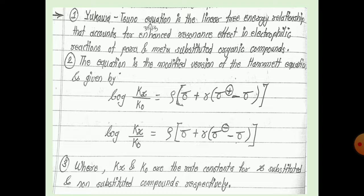The sigma plus value scale is based on heterolytic SN1 reaction of p-substituted phenol dimethyl chloromethane, where groups like NH2 can resonance stabilize positive charge. The Yukawa-Tsuno equation is a linear free energy relationship that accounts for enhanced resonance effect in electrophilic reactions of para or meta-substituted organic compounds. The equation is a modified version of the Hammett equation.